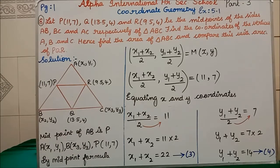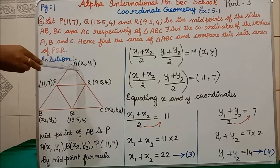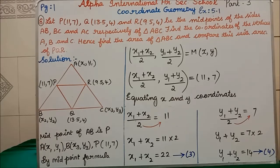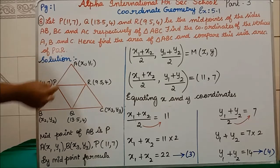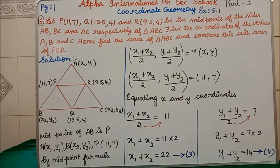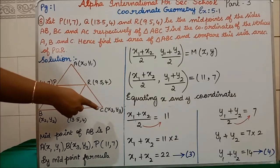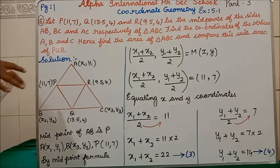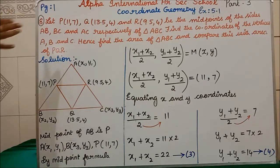Find the coordinates of the vertices A, B, C. We have not been given the vertices of A, B and C — we have to find them. Hence find the area of triangle ABC and compare with the area of triangle PQR. So first we have to find the vertices ABC, then find the area of triangle ABC, then find the area of triangle PQR, and compare the bigger triangle with the inner triangle.